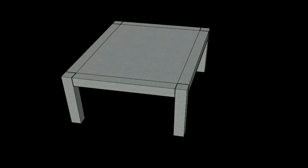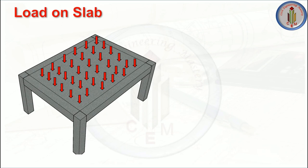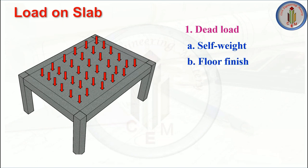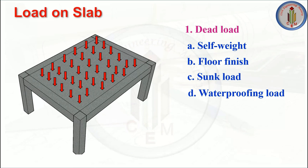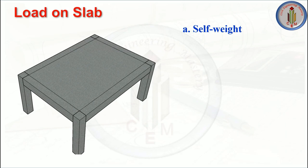First, let's see what loads come on the slab. Under gravity load, we have dead load and live load. Dead load includes self weight of the structure, floor finish load, sunk load, and waterproofing load. Waterproofing load will come on the roof slab — we always have to provide waterproofing on the roof slab according to the material used. Next is live load.